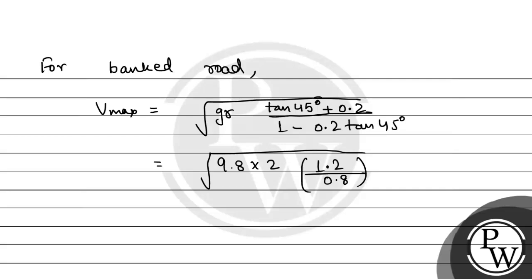So tan 45 equals 1 plus 0.2, that is 1.2, and this is 0.8. So on solving this, this will be 19.5 kilometers per hour. This will be Vmax equals 19.5 kilometers per hour.